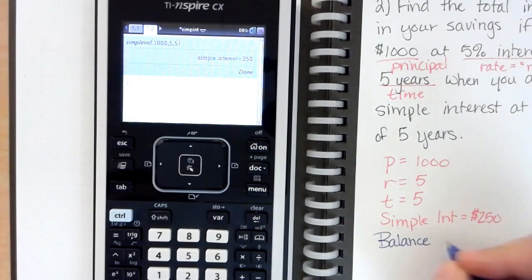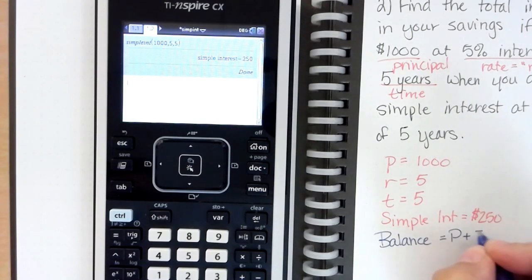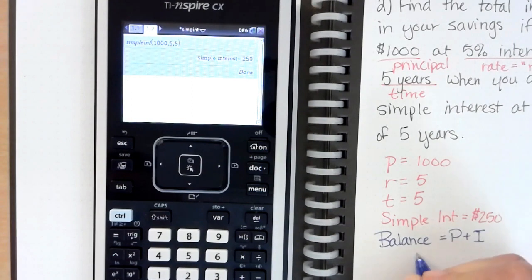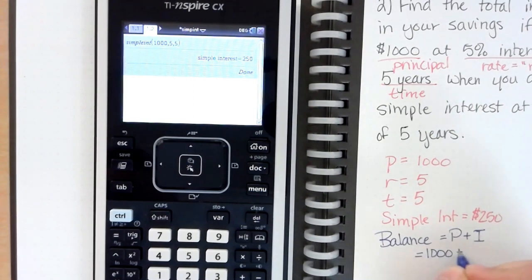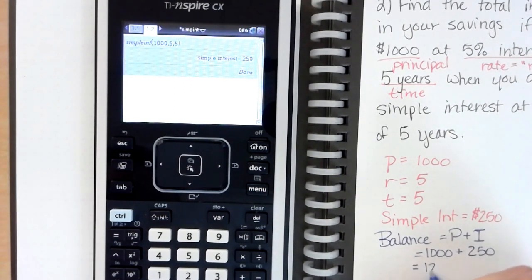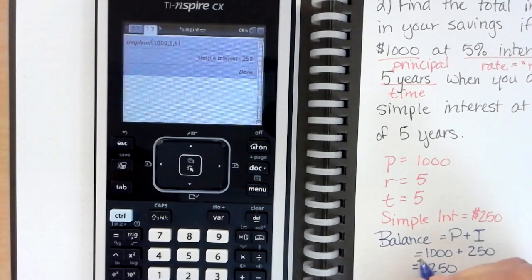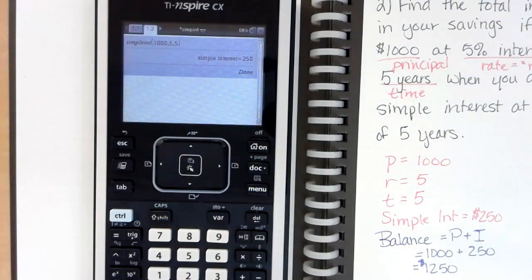So we're going to take a thousand dollars plus the 250 and we get a grand total of twelve hundred and fifty. Now the difference, this was basically the same problem using the same amount of money, started with the same interest rate, the same number of years.